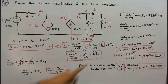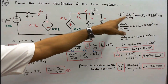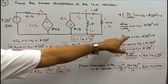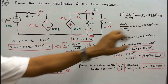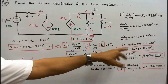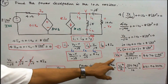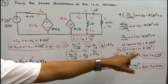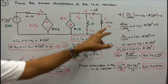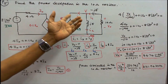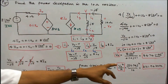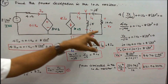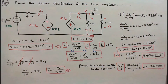Substituting equation 2 into equation 1: 4 times (V0 divided by minus j40) plus 0.1 times V0 minus 8 angle 20 degrees equals 0. This simplifies to V0 divided by (minus j10) plus 0.1 V0 minus 8 angle 20 degrees equals 0. Simplifying further: V0 times (0.1 plus j0.1) equals 8 angle 20 degrees. Therefore V0 equals 8 angle 20 degrees divided by (0.1 plus j0.1), which equals 56.74 angle minus 25 degrees. Power dissipated in the 10 ohm resistor is V0 squared divided by R: 56.74 squared divided by 10 equals 321.94 watts.